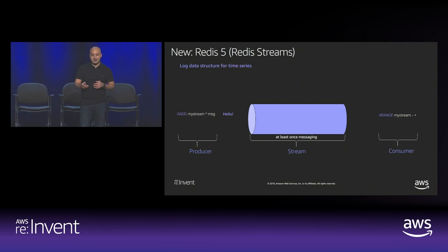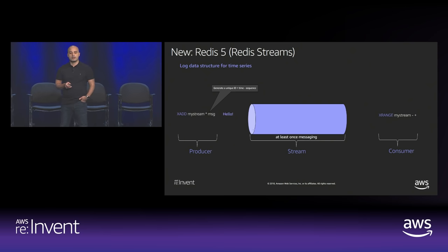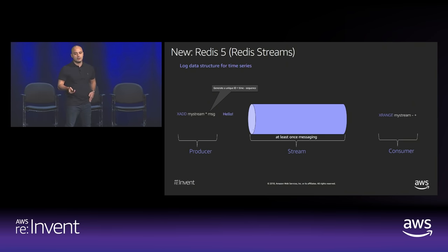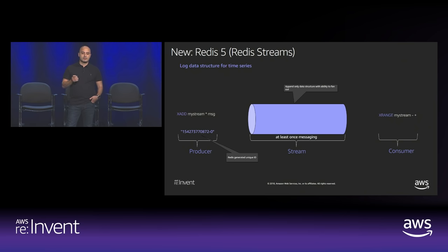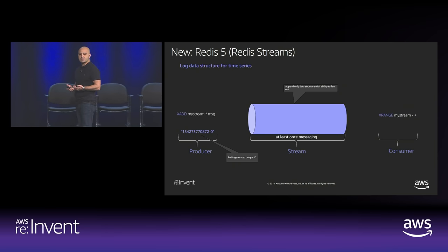From a producer standpoint, you can add a value to the stream using the XADD command. You define the name of the stream — in this case it's called 'my stream.' The star tells Redis to generate a unique ID for you; the ID is always a timestamp with a sequence, so it's guaranteed to be unique. The message is a pair with the message and the value. Once persisted, Redis returns that unique ID, which you can use to iterate over messages in the stream.